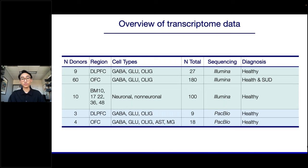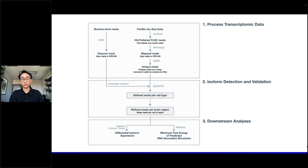The transcriptome data includes long-read PacBio samples from GABA, GLU, and OLIG cell types from both the DLPFC and OFC. The OFC also contains samples from astrocytes and microglia. Illumina short reads were also included to quantify isoforms and get their abundances. The workflow has three parts: processing the transcriptome data (both long and short reads); detecting and characterizing isoforms followed by validations; and downstream analyses including differential isoform expression and analysis of minimum free energy of predicted RNA secondary structures.